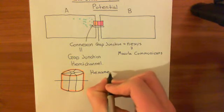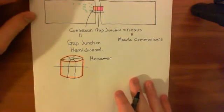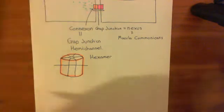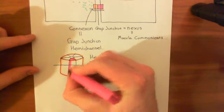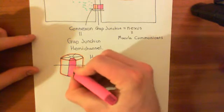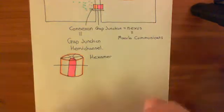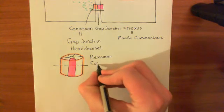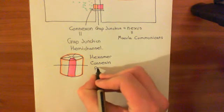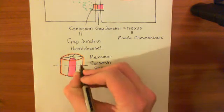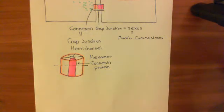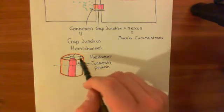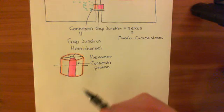Each one of these individual six pieces which makes up the connexon protein overall, or the gap junction hemichannel, is known as a connexin protein. One of these individual proteins is known as a connexin protein. There are many different types of connexin proteins — we have a huge number of genes encoding for proteins which can actually be used in these six slots to make a connexon, meaning you can make an awful lot of different connexons.